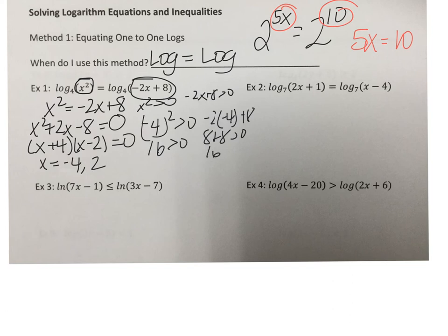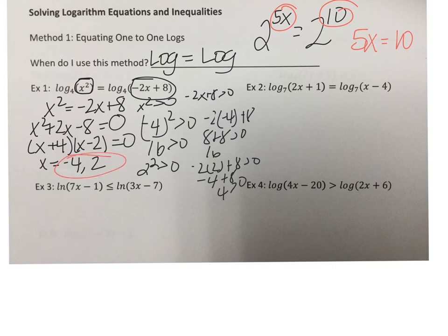Let's check positive 2: 2 squared is greater than 0, yes. Negative 2 times 2 plus 8 gives negative 4 plus 8, which is 4 — greater than 0, yes. So both of our answers work here: x = −4 and x = 2. We're going to have to check domain restrictions on every equation, because at any point you can end up with extraneous solutions.